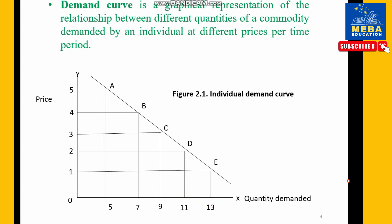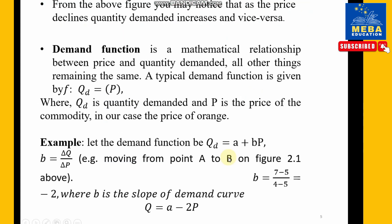A demand curve shows an inverse relationship between quantity demanded and the price of a given commodity. The demand curve represents the demand schedule and the law of demand — that is, the inverse relationship between price and quantity demanded. The demand function is a mathematical relationship between price and quantity demanded.